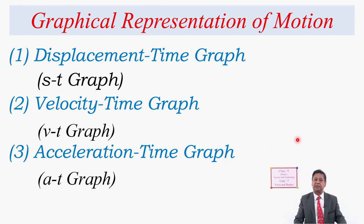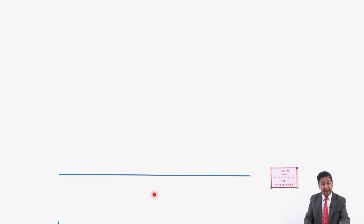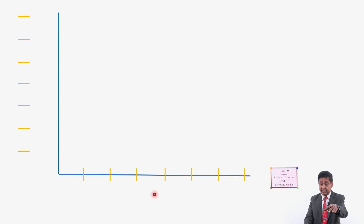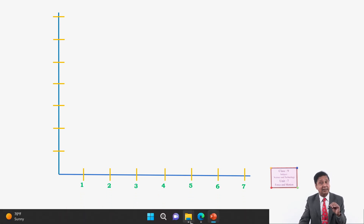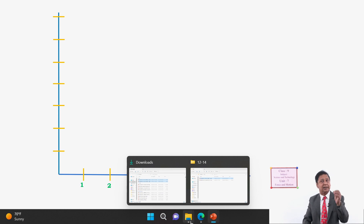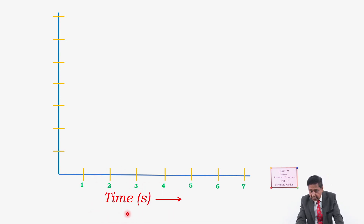Let us continue with the displacement-time graph. In any graph there are two axes: a horizontal line representing the x-axis and a vertical line representing the y-axis, and we divide them into equal parts. For the displacement-time graph, time is always taken on the x-axis, normally in seconds.